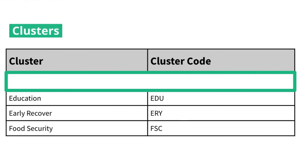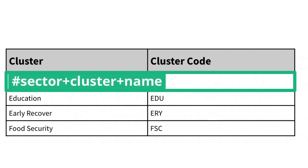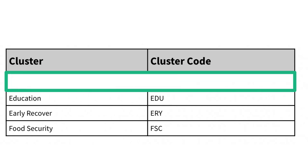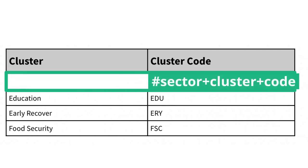Let's start with clusters. If your dataset includes both cluster names and cluster codes, you could distinguish between the two by using hashtag sector plus cluster plus name, and hashtag sector plus cluster plus code.